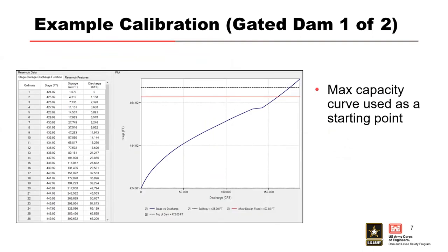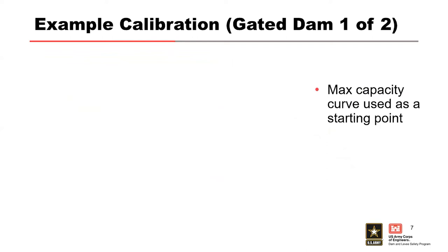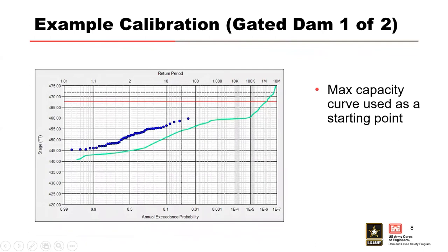When using the maximum capacity rating curve, we can pretty much anticipate that the stage frequency curve will be lower than the observed points, since the project would not release maximum capacity discharges during a flood event. From the first run of the expected curve using that maximum capacity discharge rating curve, we can see that our assumption is correct — the green expected curve falls far below the observed empirical annual peak stages, which confirms that the project does indeed store water during these events.